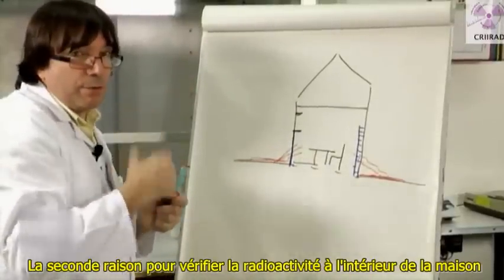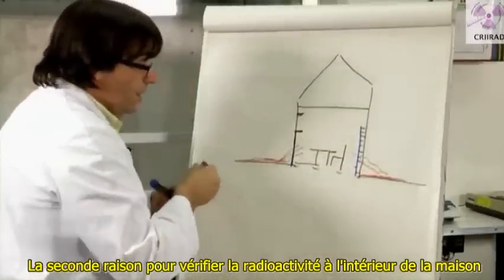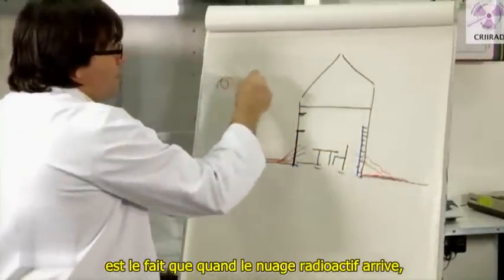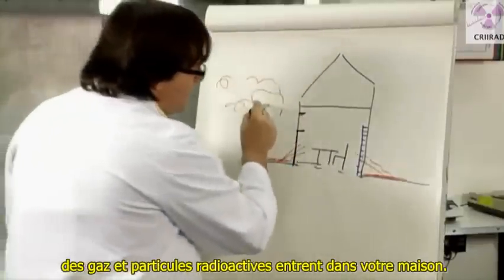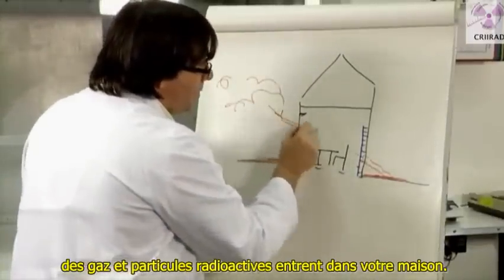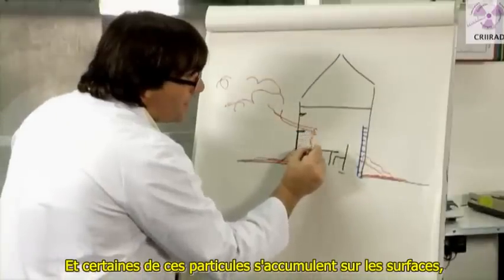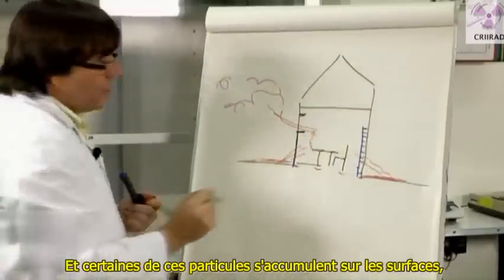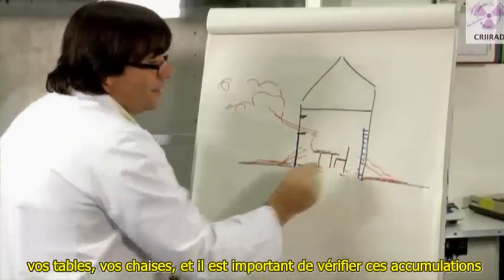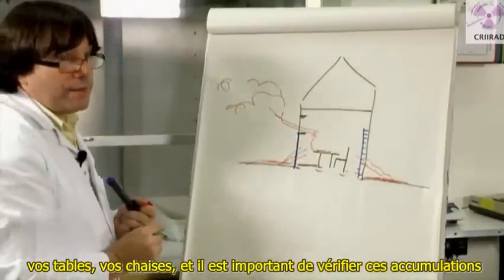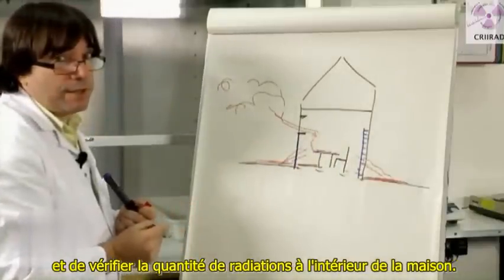The second reason for checking radiation inside your house is the fact that when the radioactive cloud arrived, radioactive gases and particles entered your house. And some of these particles accumulated on the surfaces — your table, your chair. And it's important to check this accumulation and the amount of radiation inside the house.